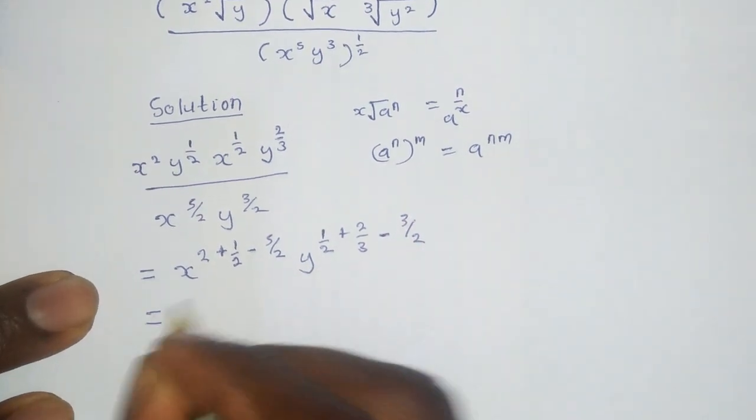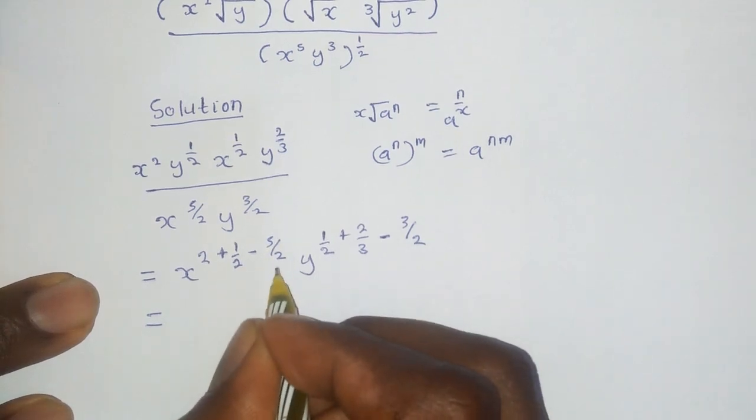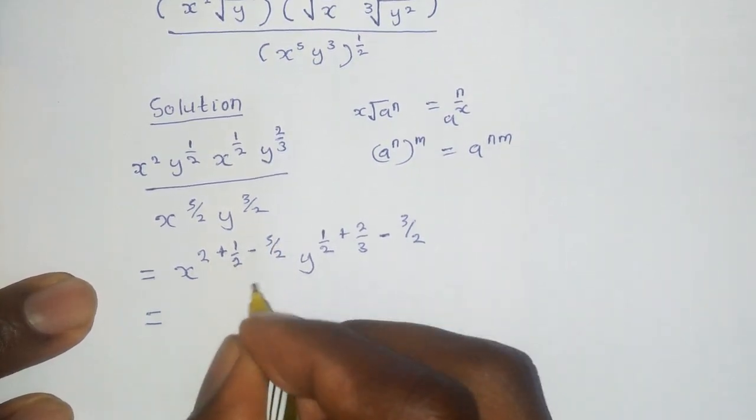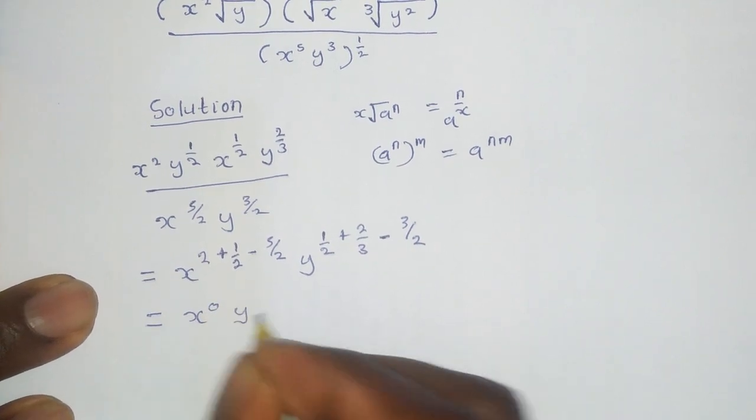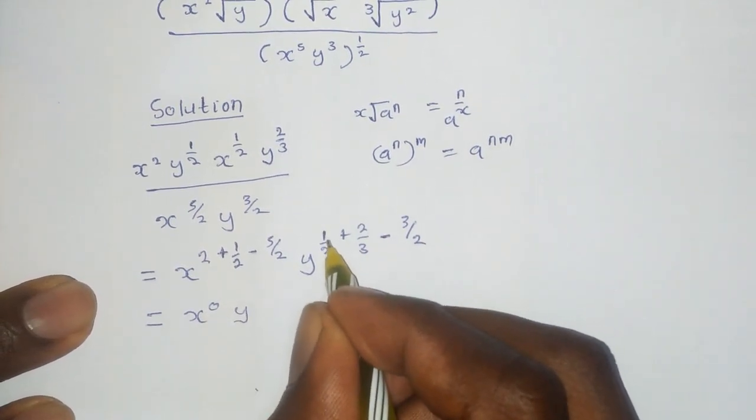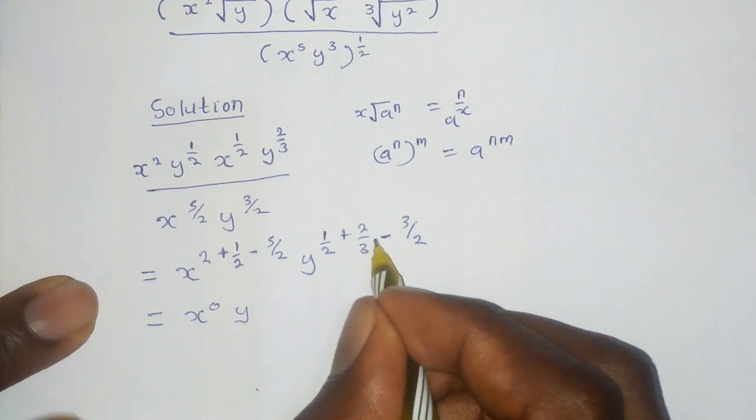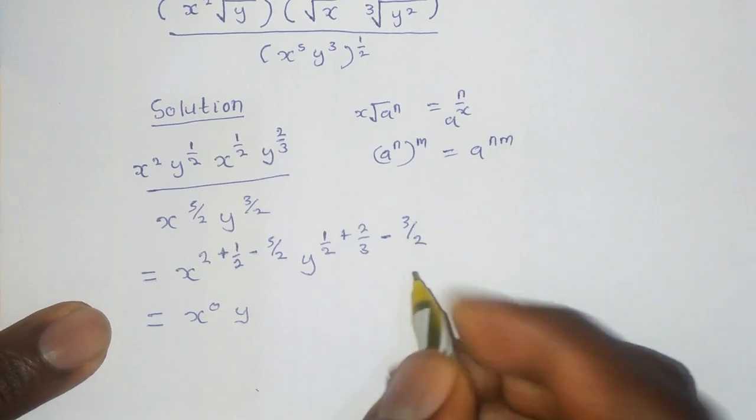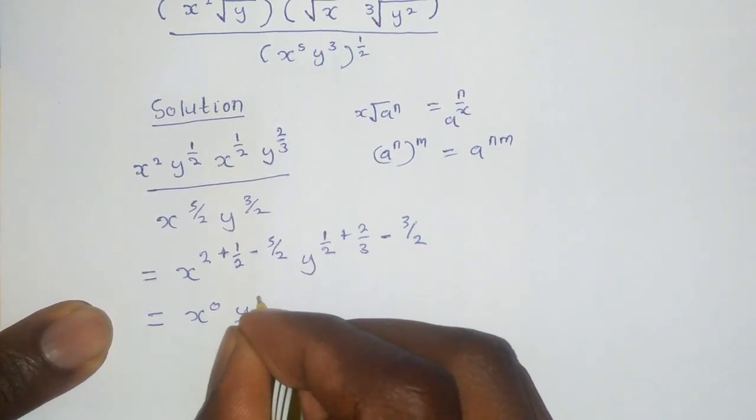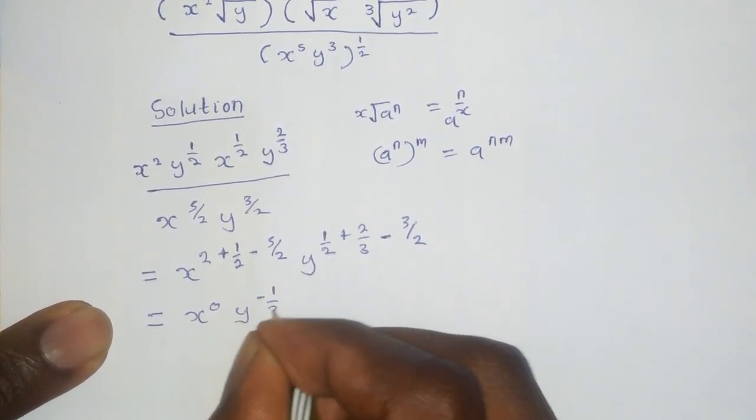This becomes 2 plus a half is the same as 5 divided by 2. That means they will cancel out. That will be x raised to 0. y. A half plus 2 divided by 3 minus 3 divided by 2. That will give us negative 1 at this point.